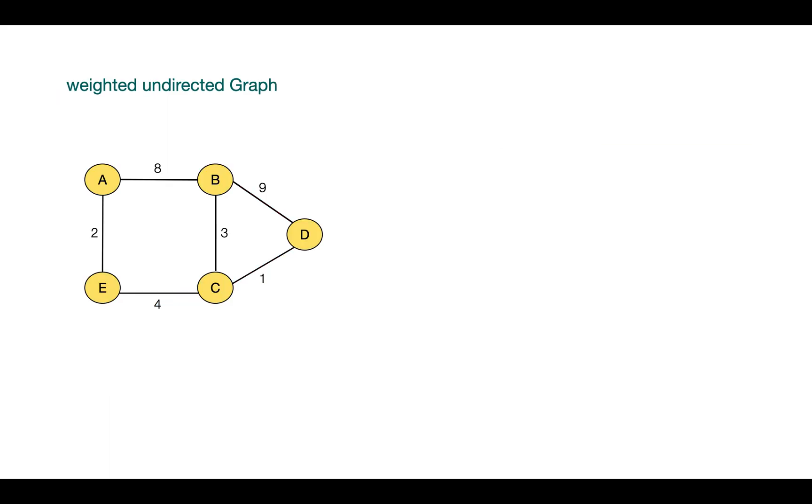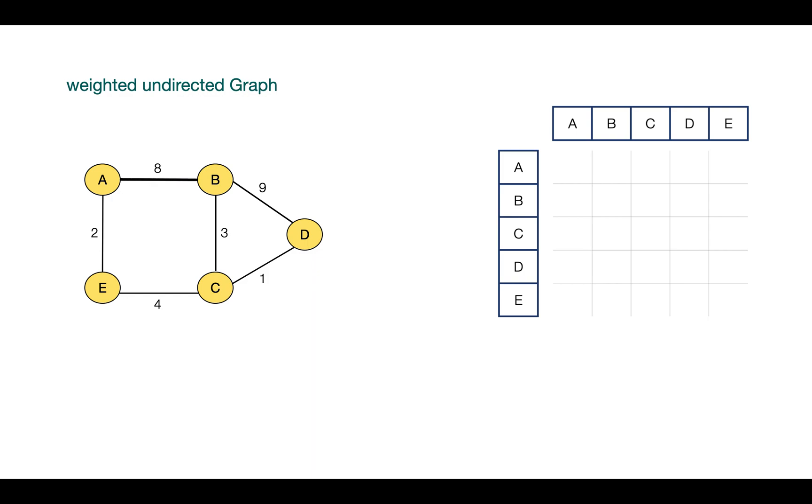If the graph is weighted graph, then these cells indicating the presence of edges or connections will be containing the edge weights of respective edges. So here we are having an undirected weighted graph where there is no single direction of edge. We can move either from A to B as well as from B to A. So we can say A is adjacent to B and B is also adjacent to A.